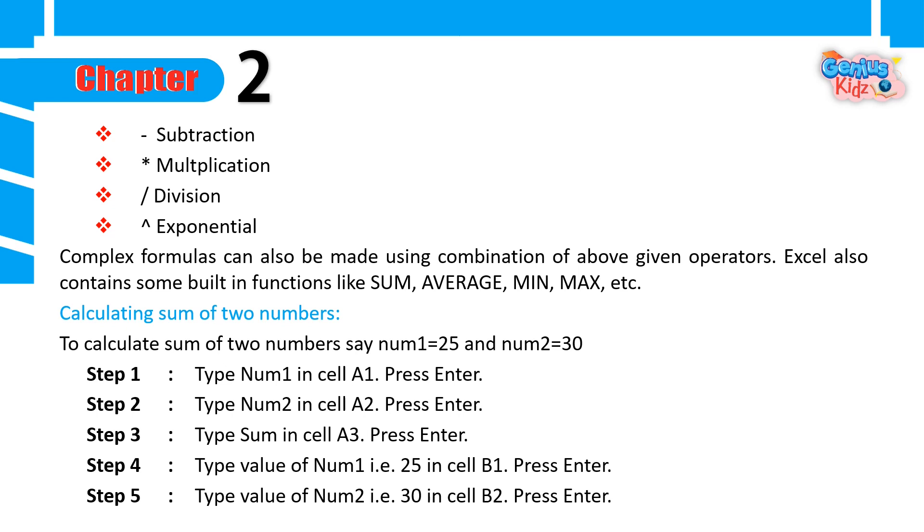Calculating Sum of Two Numbers. To calculate sum of two numbers say num1 equals 25 and num2 equals 30. Step 1: Type num1 in cell A1, Press Enter. Step 2: Type num2 in cell A2, Press Enter. Step 3: Type sum in cell A3, Press Enter. Step 4: Type value of num1 that is 25 in cell B1, Press Enter. Step 5: Type value of num2 that is 30 in cell B2, Press Enter.